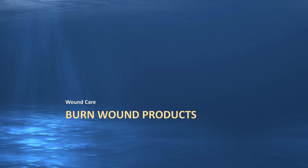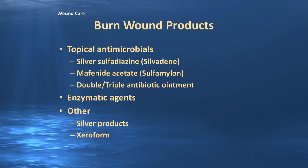In this section we're going to discuss burn wound products — items definitely in your cache, as well as items you may find outside your cache that may be indicated for patients staying with you greater than 72 hours. First we'll look at topical antimicrobials, which include silver sulfadiazine (Silvadene), mafenide acetate cream (Sulfamylon), and triple antibiotic ointment. We'll also look at mafenide acetate or Sulfamylon powder, which can be used as a solution or in double antibiotic ointment. Enzymatic agents are not in your cache but are commonly used topical agents you may need to utilize if patients stay longer.